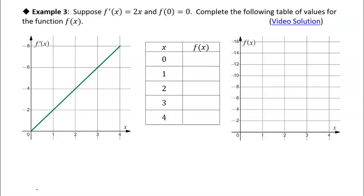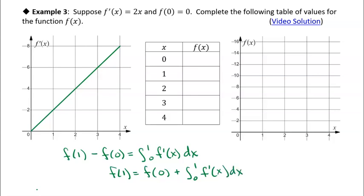I'm going to do the same thing I did before. I know that f(1), the net change from 0 to 1, which is f(1) - f(0), equals the integral from 0 to 1 of f'(x) dx. I can rearrange that to find f(1) by adding f(0) to both sides, so I get f(1) = f(0) + ∫₀¹ f'(x) dx.